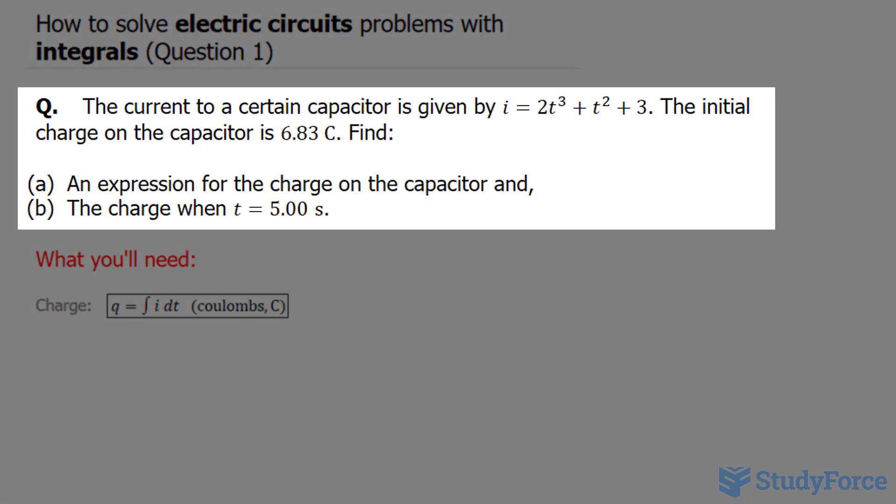The question reads: the current to a certain capacitor is given by i = 2t³ + t² + 3, where i represents the current and t represents time.